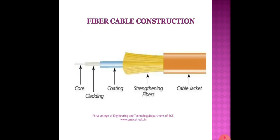Regarding fiber optic cable construction, it has an outer cable jacket, strengthening fibers, a coating over the cladding, and inside the cladding there is a glass fiber. Many design configurations are available today. Depending on the configuration, it may include a core, cladding, a protective tube, a polyurethane compound, and one or more protective jackets. A buffer jacket provides protection for the fiber from external mechanical influences that could cause fiber breakage or excessive optical attenuation.